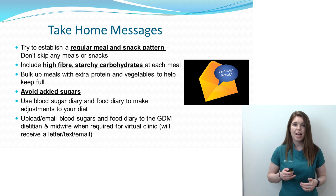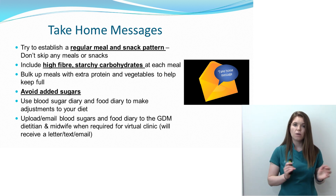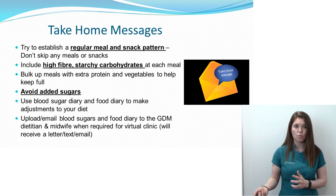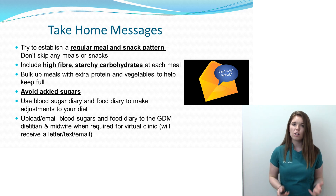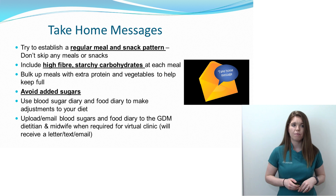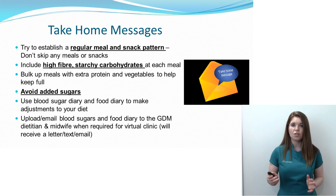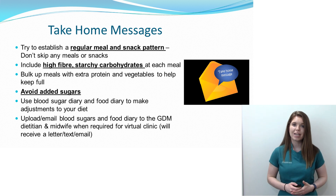Just to bring it all back together, my take-home messages are: try to establish a regular meal and snack pattern, spread meals out evenly at around the same times each day. Try to include high-fibre starchy carbohydrates like brown bread and brown pasta at each main meal. Bulk out your meals with lots of protein and vegetables, which don't affect your blood sugar levels. Try to avoid added sugars and free sugar foods like table sugar, full-sugar fizzy drinks, biscuits, cakes, buns, and chocolate. Use your blood sugar diary and food diary together to make adjustments, and upload or email your blood sugars to us every two weeks so we can review them.